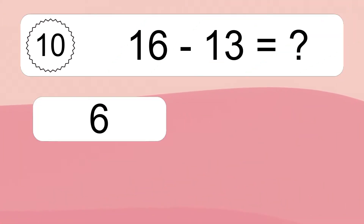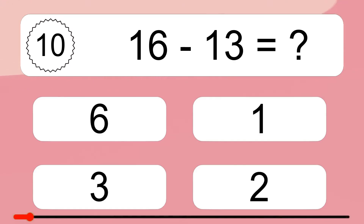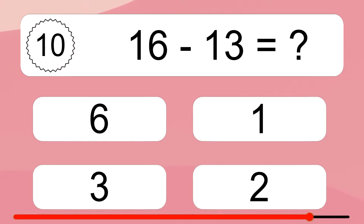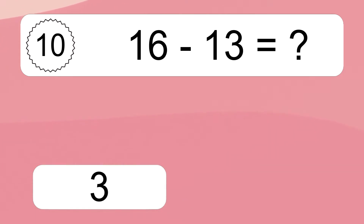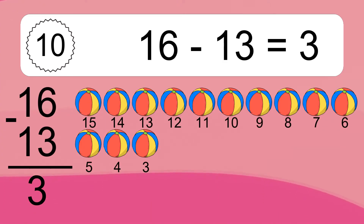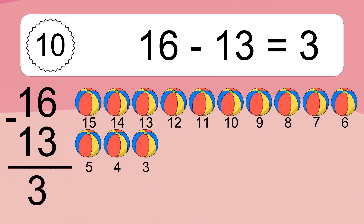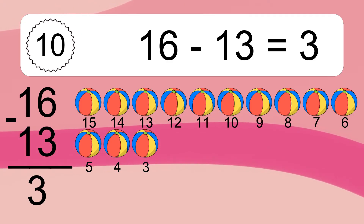16 minus 13 equals what? 16 minus 13 equals 3. Let's count it. 15, 14, 13, 12, 11, 10, 9, 8, 7, 6, 5, 4, 3.